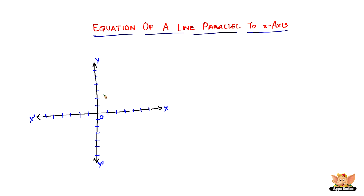Now let's say we have this line passing here. This is the line whose equation we have to find. This line is exactly parallel to the x-axis, which means all the points of this line are at the same distance from the x-axis. It exactly coincides with the fourth division of the y-axis, so the value here is 4.